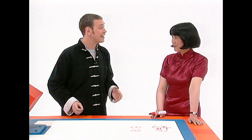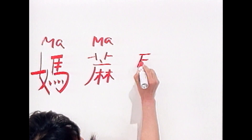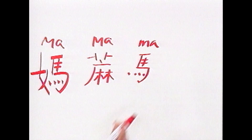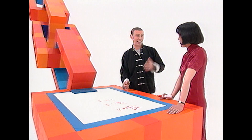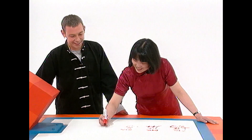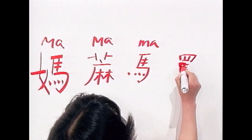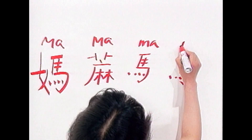So the Mandarin word for mother is ma. Well, what you just said is another word — it means horse, pronounced 'ma'. Let me try again. The Mandarin word for mother is ma. You just said it's another word — a word that means to swear. So where am I going wrong?